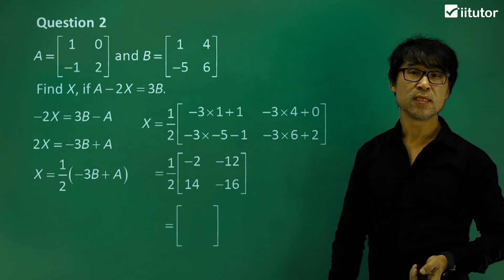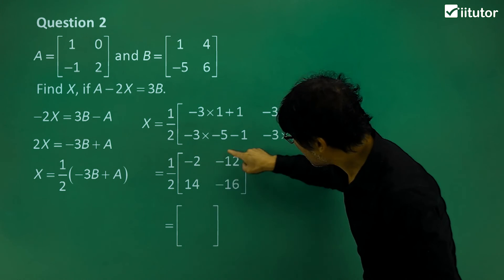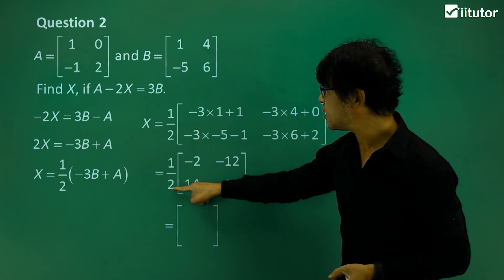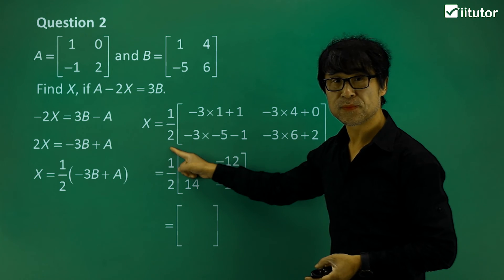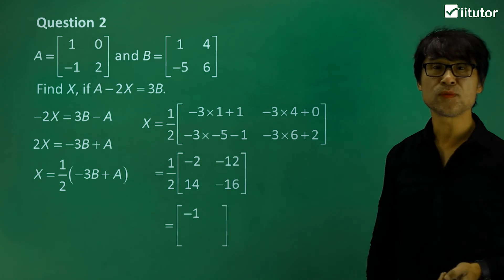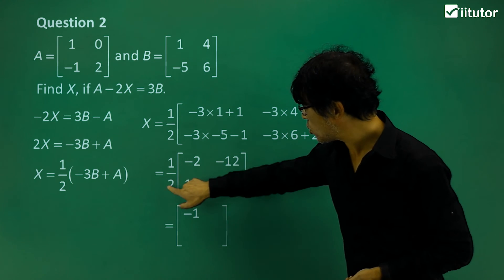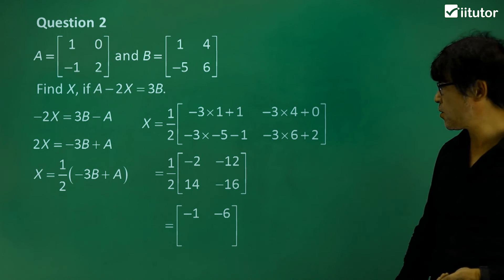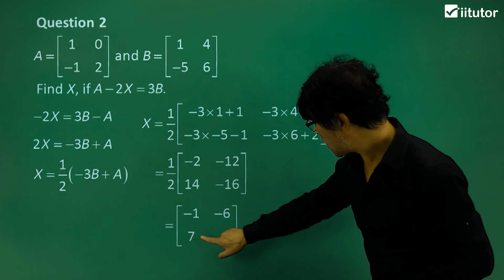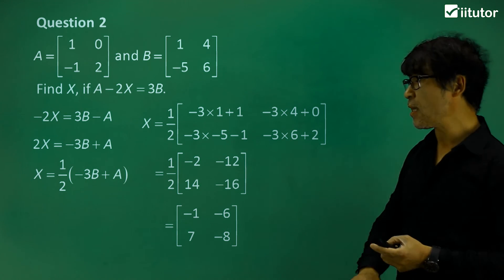So next step is to divide all of the elements by 2 as instructed over here. So what are you going to do? Divide 2 by 2, which is negative 1. Divide 12 by 2 over here, which is 6. What else? 7. And then 8. That's everything.